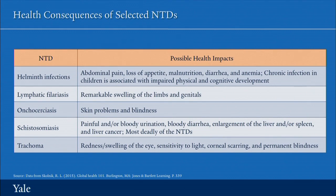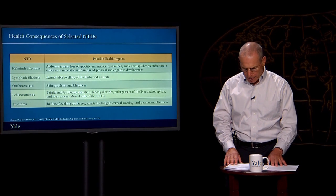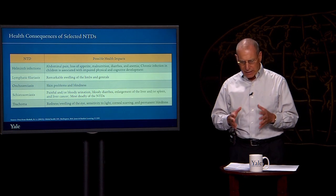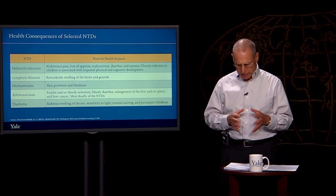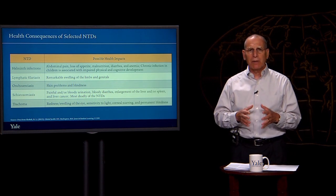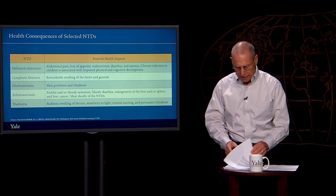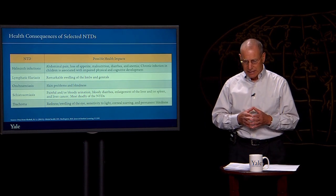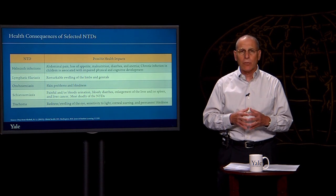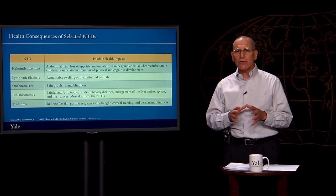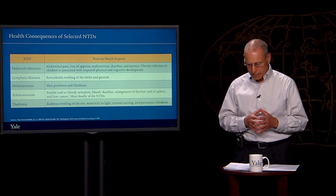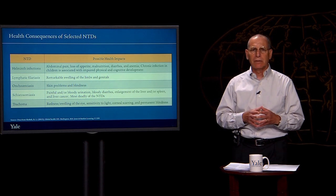Let's talk about some of the basic approaches to how neglected tropical diseases are addressed. One of the basic principles has been mass drug administration — an approach in which drugs are given to people living in endemic areas, usually several times a year, to prevent their getting infected with the targeted NTDs. This is generally done in a community-based and directed manner, with the idea that mass drug administration over time — sometimes 10 to 20 years — will completely stop transmission of a disease.